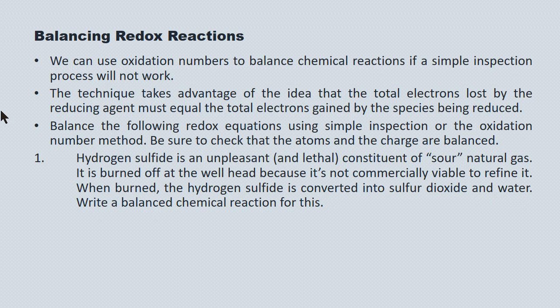Hydrogen sulfide is an unpleasant constituent of sour natural gas. It's burned off at the wellhead because it's not commercially viable to remove it through other means. When it's burned, it's converted into sulfur dioxide and water, and we want to write a balanced chemical equation for it. Here's the skeleton reaction. I could probably solve it through inspection, but I'm going to skip past that to demonstrate how to employ oxidation numbers to do so.